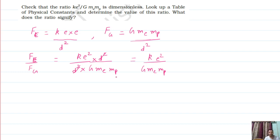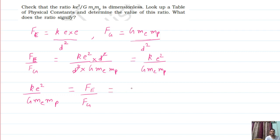It is a dimensionless quantity. The ratio ke² upon G·m_e·m_p equals the ratio of electrical force to gravitational force. Now, what is the dimension of force? It is MLT⁻². Here also MLT⁻². Everything cancels, and what remains is M⁰L⁰T⁰. That means this is a dimensionless quantity.